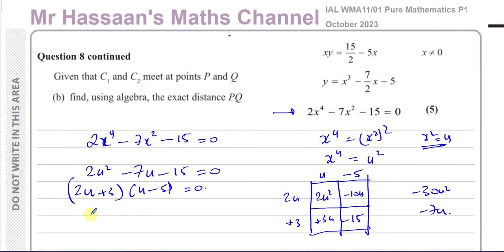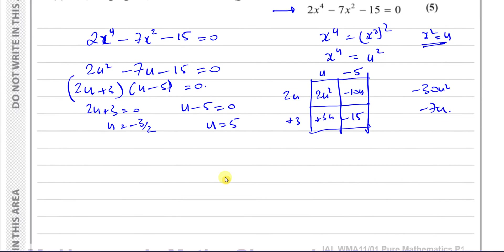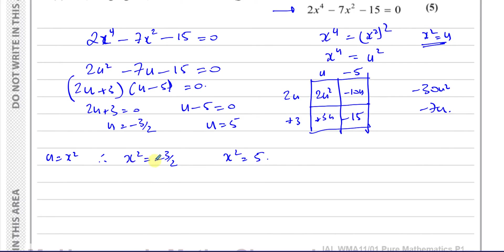So either 2u plus 3 equals 0, giving u equals minus 3 over 2, or u minus 5 equals 0, giving u equals 5. Since u equals x squared, we get x squared equals minus 3 over 2 — which has no real solution since you can't take the square root of a negative number — or x squared equals 5, giving x equals plus or minus root 5.